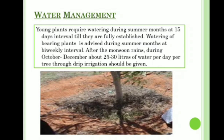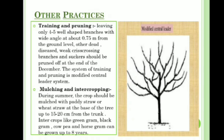Other practices — training and pruning: leave only four to five well-shaped branches with wide angles at about 0.5 meters from the ground level. Dead, diseased, weak, criss-crossing branches and suckers should be pruned off at the end of December. The system used is the modified central leader system. Mulching and intercropping: during summer, the crop should be mulched with paddy straw or wheat straw at the base of the tree up to 15 to 20 centimeters from the trunk. Intercrops like green gram, black gram, cowpea, and horse gram can be grown up to eight years.